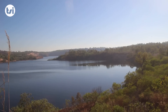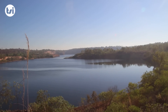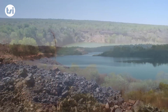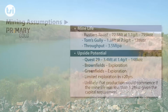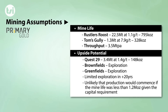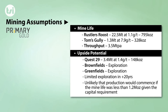Our valuation assumes ore is initially mined from only the Rustler's Roost and Tom's Gully deposits. Whilst our mine life assumption takes into account most of the current resource for each deposit, we believe there is still significant upside potential in the mine life, as we do not take into account the Quest 29 deposit, nor do we account for any exploration success despite the significant brownfield and greenfield targets that have largely been underexplored.